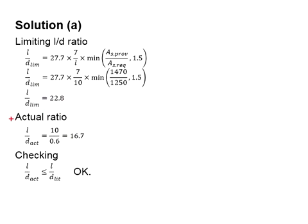Next, you will check the actual l/d ratio. It is obtained by dividing 10 meters by 600 mm, and you will get the ratio of 16.7. Compare these two values. The actual l/d ratio is less than the limit. Therefore, the deflection is considered acceptable.